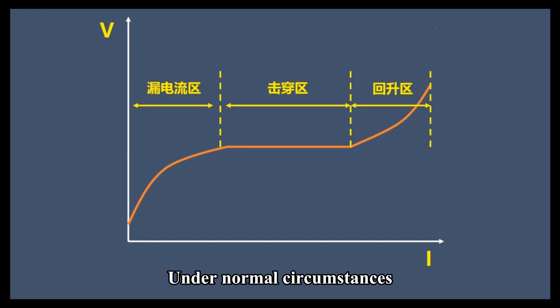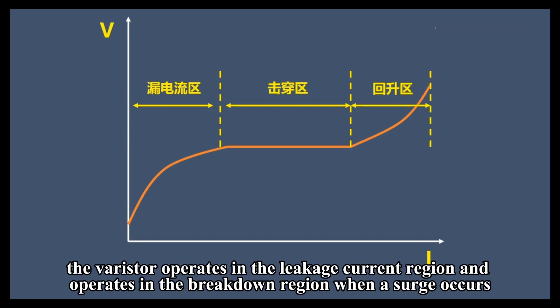Under normal circumstances, the varistor operates in the leakage current region and operates in the breakdown region when a surge occurs.